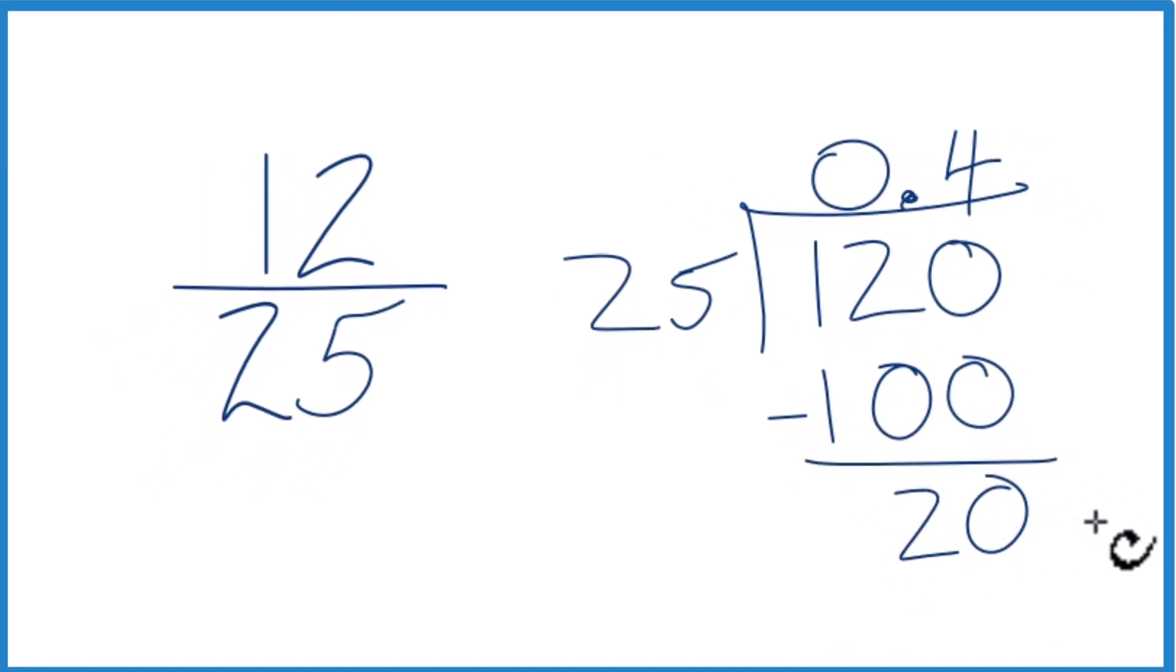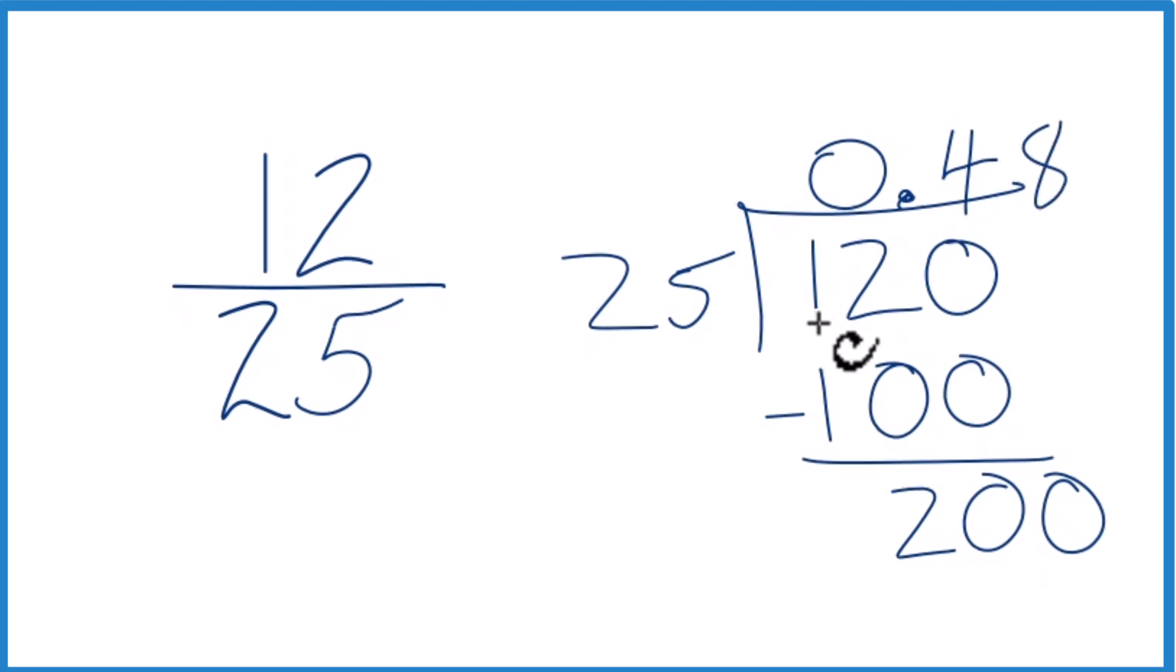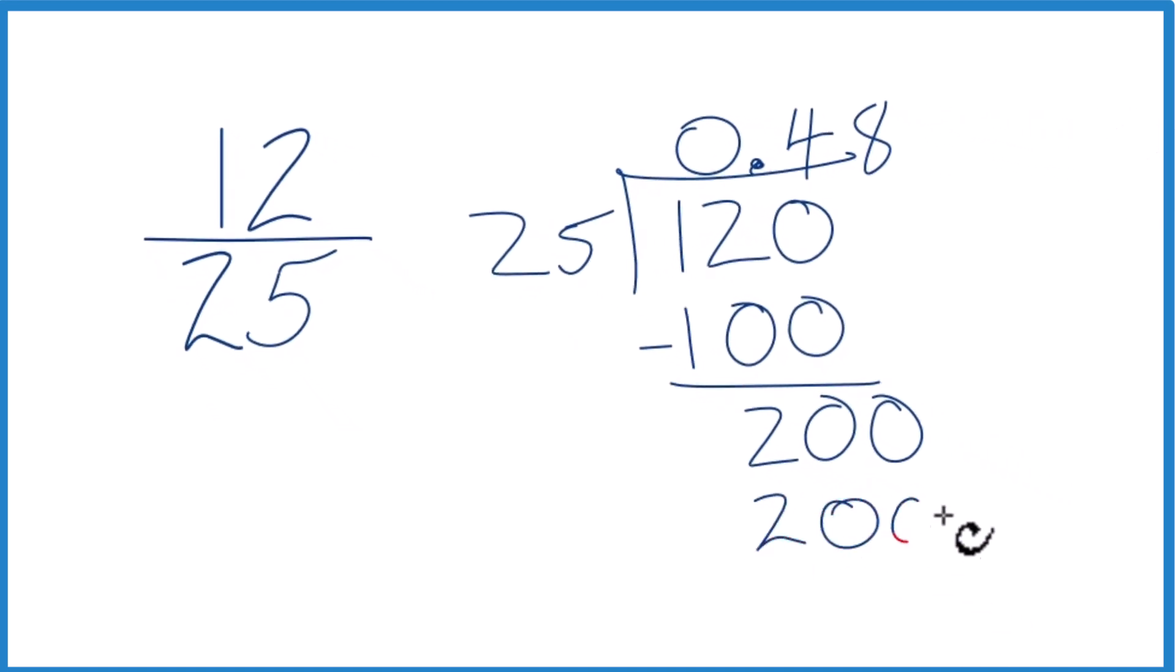20 won't go into 25. We could call it 200. We move over 1 here. Now we said 4 times 25 is 100, so 8 times 25, that gives us 200. Now we subtract, we get 0, no remainder.